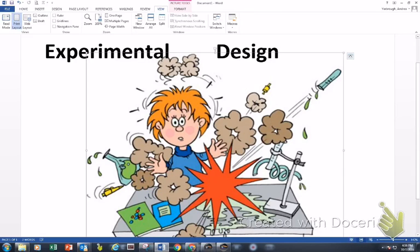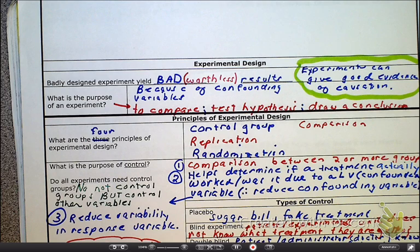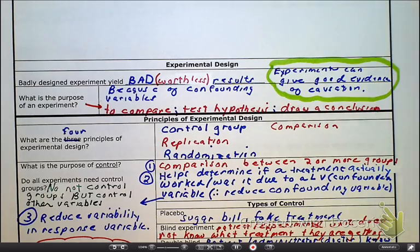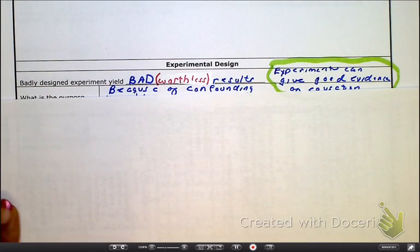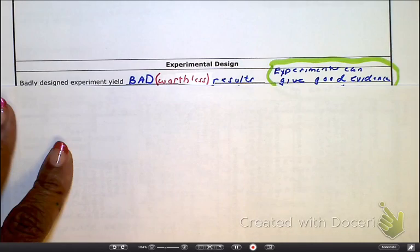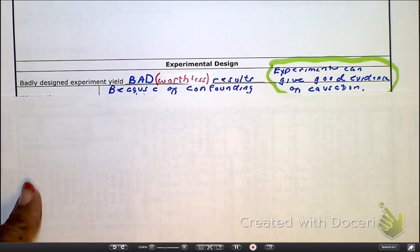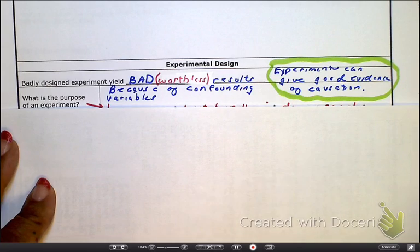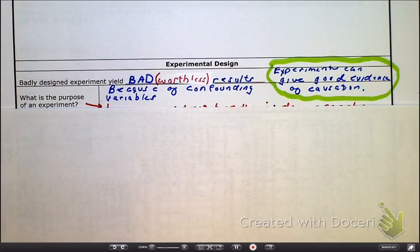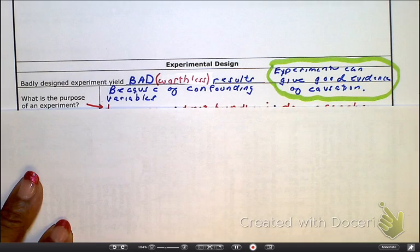Turn to page 12 of your notes. As we look at page 12, this is a quick reminder: when it comes to badly designed experiments, they yield worthless results because of confounding variables. Those confounding variables are the things basically hiding in the bushes that affect our results.